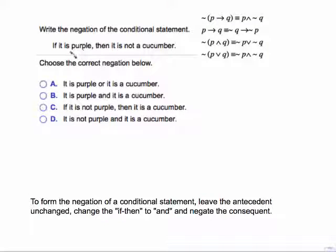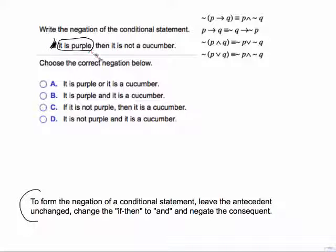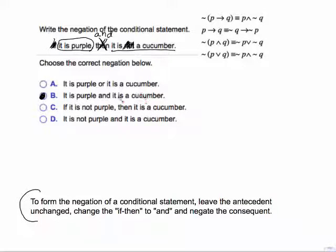Example: write the negation of 'if it is purple, then it is not a cucumber.' Using our steps: leave the antecedent unchanged — 'it is purple.' Change the if-then to AND. Negate the consequent — 'it is not a cucumber' already has NOT in it, so negating it takes out the NOT, giving 'it is a cucumber.' Result: it is purple and it is a cucumber. Be careful not to miss a NOT or confuse OR and AND.